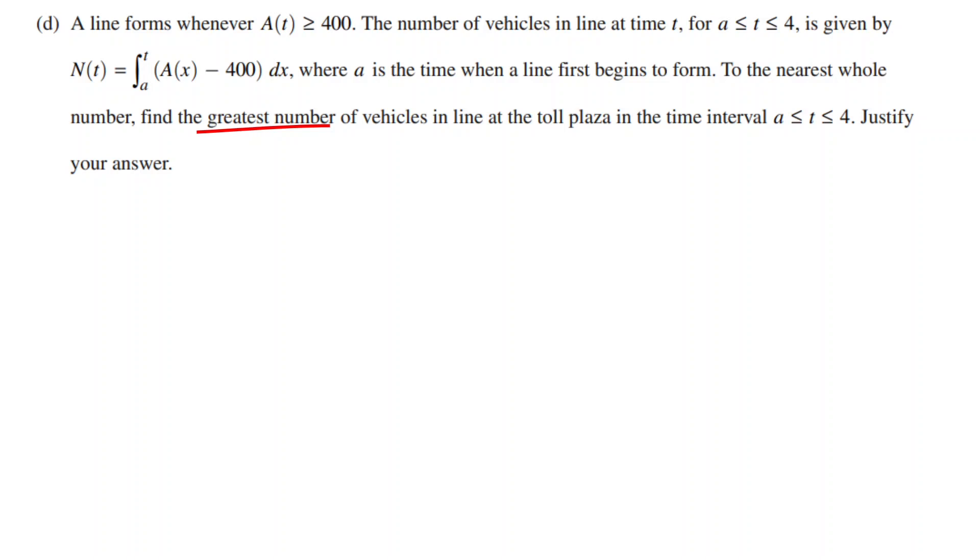In order to find this, we first have to identify the critical points by setting N prime of t, which is the same as A(t) minus 400 equals to 0. We can simplify this to A(t) equals 400.